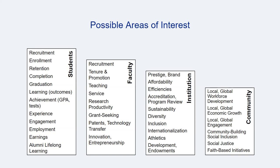Institutional users such as administrators or financial decision makers might be interested in affordability, efficiencies, and opportunities for development. Faculty might be interested in tenure and promotion, research productivity, or teaching effectiveness. Considering what's important from the user's perspective is a key step in understanding users as individuals and communities.